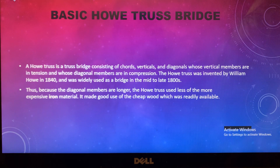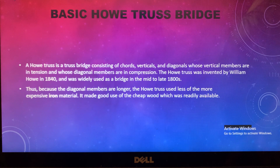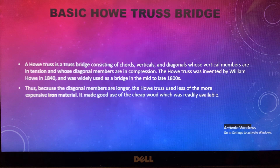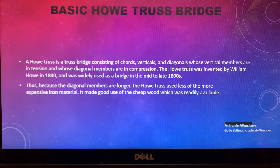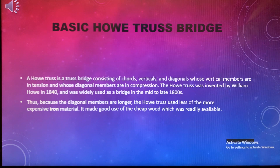The third bridge we're looking at is the Howe truss bridge. A Howe truss consists of cords, verticals, and diagonals whose vertical members are in tension and whose diagonal members are in compression. The Howe truss was invented by William Howe in 1840 and was widely used as a bridge in the mid to late 1800s, which is how it got its name. One of its advantages is that it is cheap on materials, requiring less expensive materials like iron and wood, which were readily available when it was built.